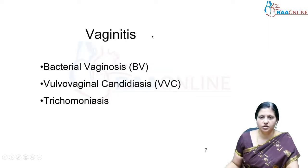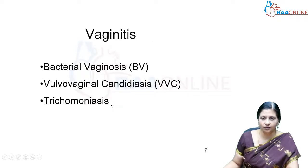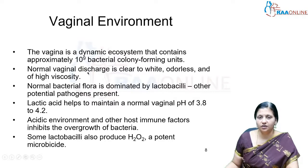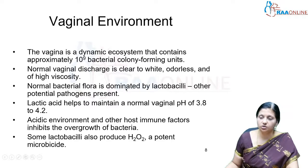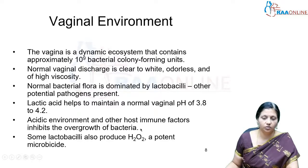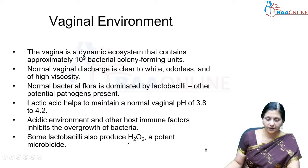Infections of the vagina include bacterial vaginosis, vulvovaginal candidiasis, and vaginal trichomoniasis. The vaginal environment is a dynamic ecosystem containing many colony-forming units. Normal vaginal discharge is clear to white, odorless, and highly viscous. Normal bacterial flora is dominated by lactobacilli, and lactic acid helps maintain a vaginal pH of 3.2 to 4.2. The acidic environment and host immune factors inhibit bacterial overgrowth; lactobacilli also produce hydrogen peroxide.